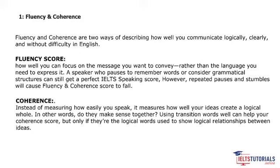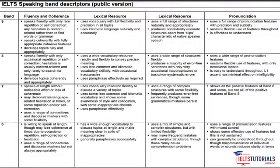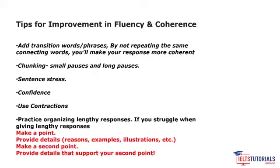Now let me give tips to improve your fluency and coherence. The first tip is to add transition words and phrases without repeating the same connectors. Transition words are connectors that help you jump from one part of a sentence to another. You have to be very specific and clear with your thoughts.